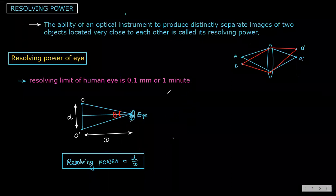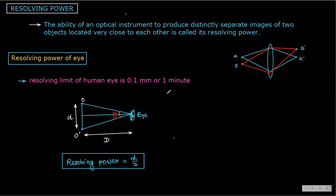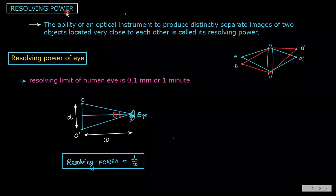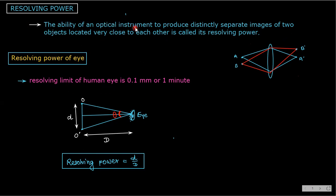Today's topic is resolving power. First of all, what is resolving power? The ability of an optical instrument to produce distinctly separate images of two objects located very close to each other is called its resolving power.